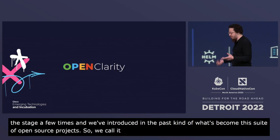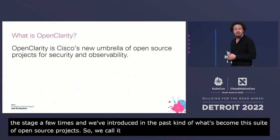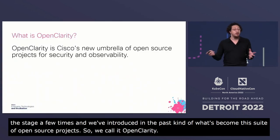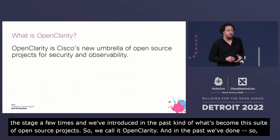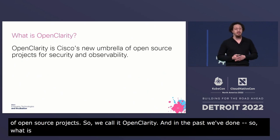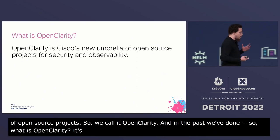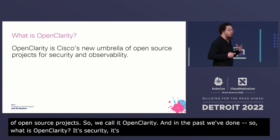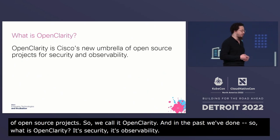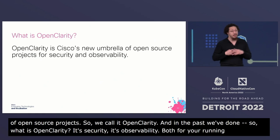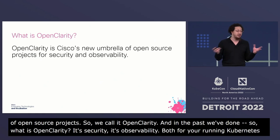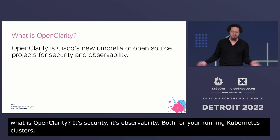So what is OpenClarity? It's security, it's observability — both for your running Kubernetes clusters and for APIs interacting between all of your applications.